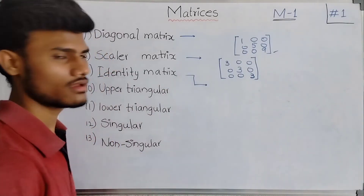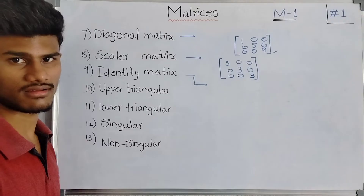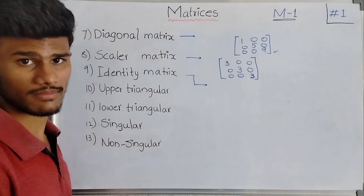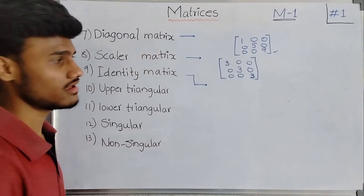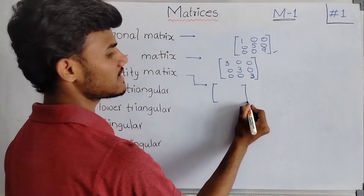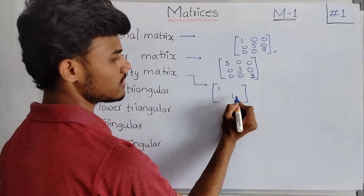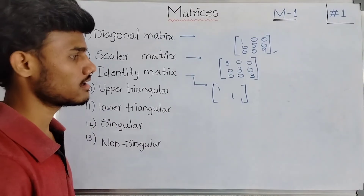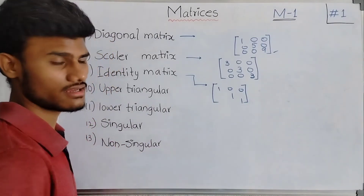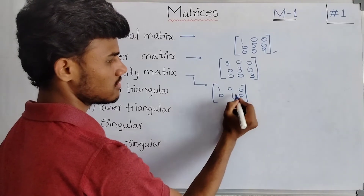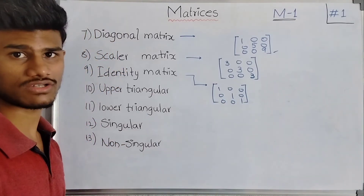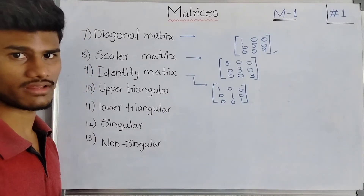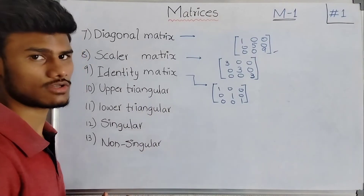Now coming to identity matrix. What is meant by an identity matrix? An identity matrix is a square matrix, a diagonal matrix, and also a scalar matrix in which all the diagonal elements are equal to 1, and all other elements are equal to 0. This type of matrix is called an identity matrix.